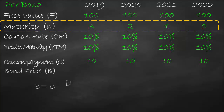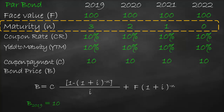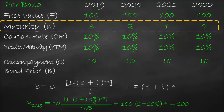The bond price formula is the present value of coupons plus the present value of face value. For year 2019 with coupon 10, YTM 10%, and N equal to 3, the formula gives a bond price of 100. Alternatively, we can use the relationship: for a par bond, bond price always equals face value, so since face value is 100, the bond price is 100.